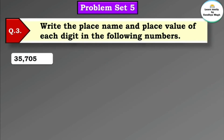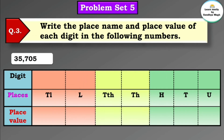Question 3: write the place name and place value of each digit in the following numbers. Even if digits are the same, the place names are different, and therefore the place value of each digit is different. Number 1 is 35,705. Let's arrange this number according to their places: units, tens, hundreds, thousands, ten thousands, lakhs, and ten lakhs.